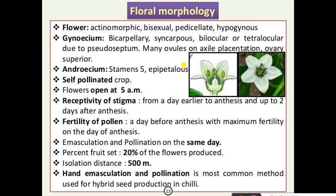Flower morphology of chili: the flower is actinomorphic, bisexual, pericarpellate, hypogynous. Gynoecium bicarpellary, syncarpous, bilocular or tetralocular due to pseudoseptum. Placentation axile, ovary superior. Androecium: stamens 5, epipetalous. It is a self-pollination crop. Flowers open at 5 AM; receptivity of stigma is from a day earlier to anthesis and up to two days after anthesis.